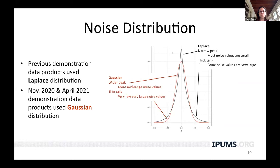There's also a question of exactly which distribution to use for the noise. Traditional differential privacy uses the Laplace distribution, which has a narrow peak — most noise values are very small — but it also has rather thick tails, which means you can get a not insignificant number of very large noise values that cause some things to look really weird in the final data. For the most recent two demonstration data products, the Bureau has switched to using a Gaussian distribution, which has a somewhat wider peak but thin tails, so you get very few very large noise values.